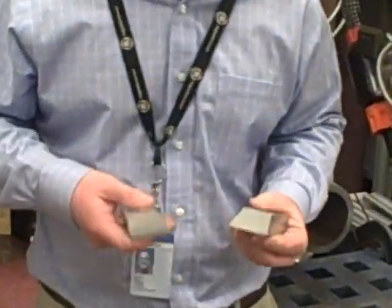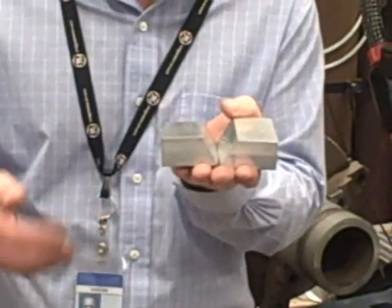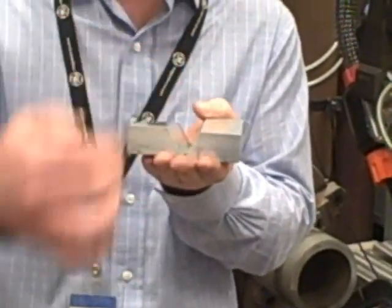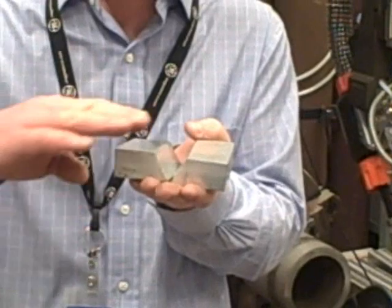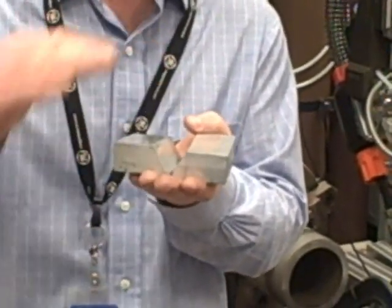If you look at the conventional joining processes that we traditionally use, we'll take two components, bring them together, put a joint preparation in those components, and then deposit weld metal, pass upon pass upon pass, to build that joint back up.